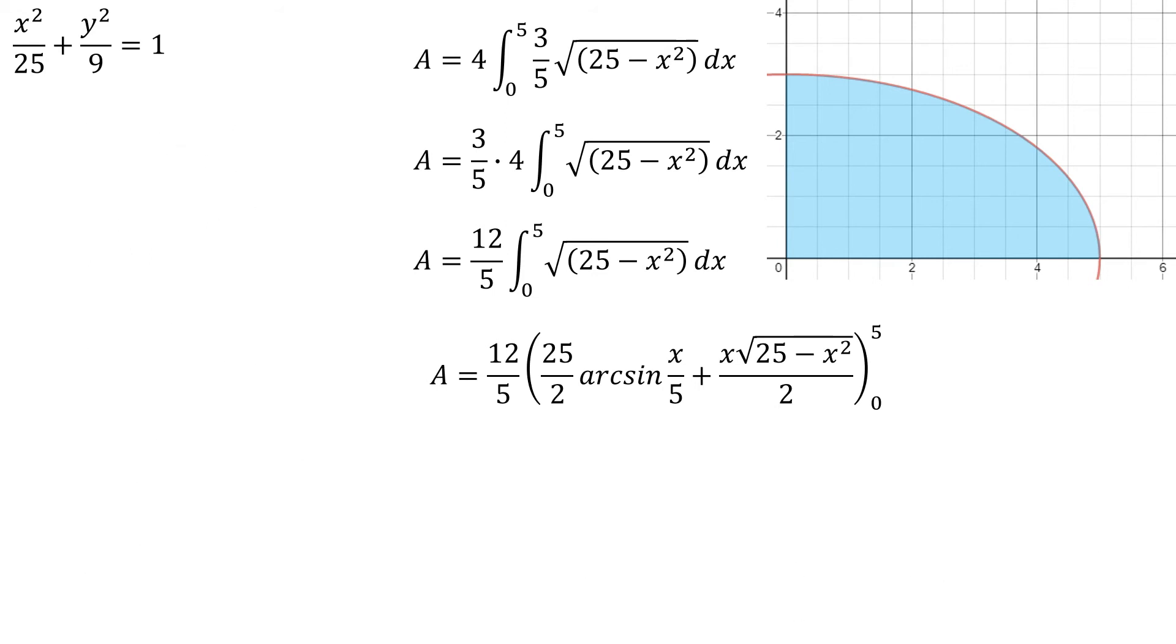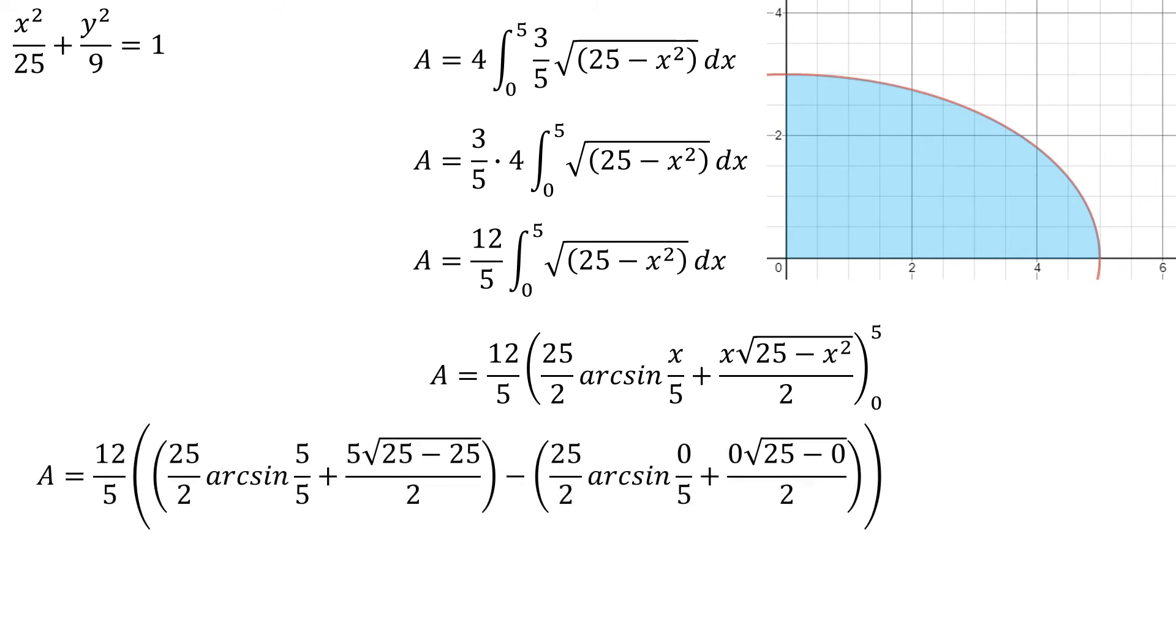I'm going to need some room. So I've got to plug in 5 every place I see an x. And so x becomes 5. x squared becomes 25. And then I've got to plug in 0 every place I see an x. And this is going to simplify super duper nicely. Because 5 times the square root of 0 is going to become 0. That's going to disappear, right? That's not going to be any concern. That's 0.